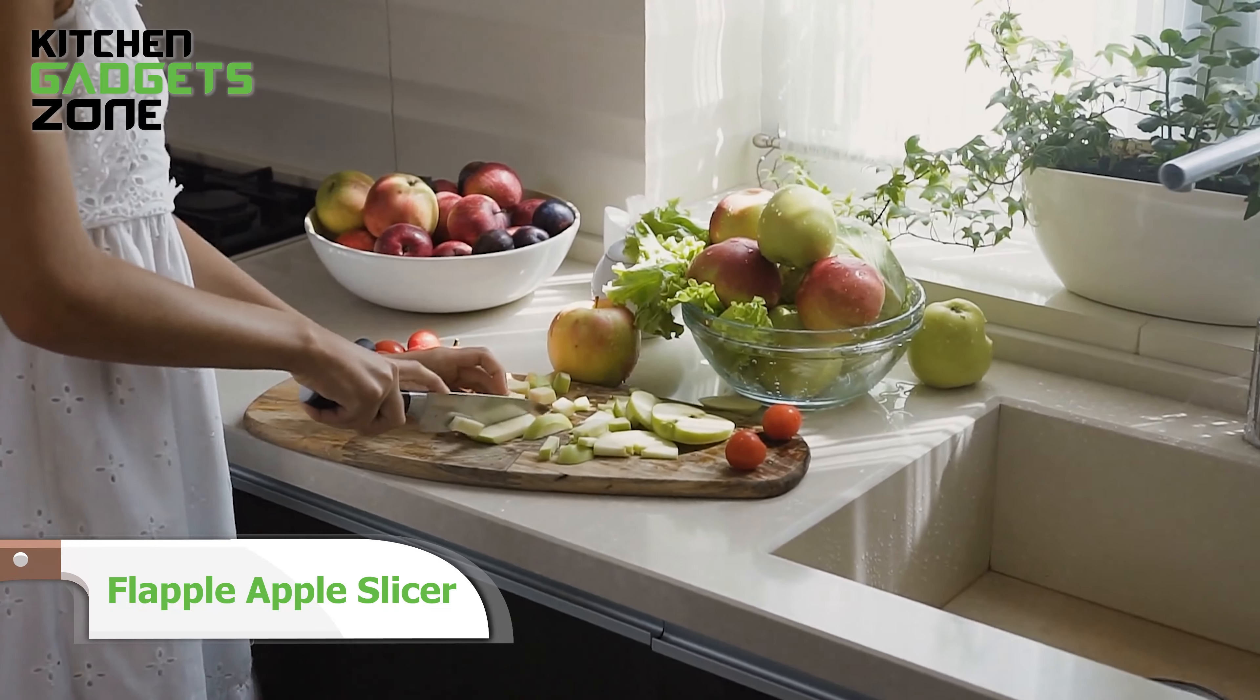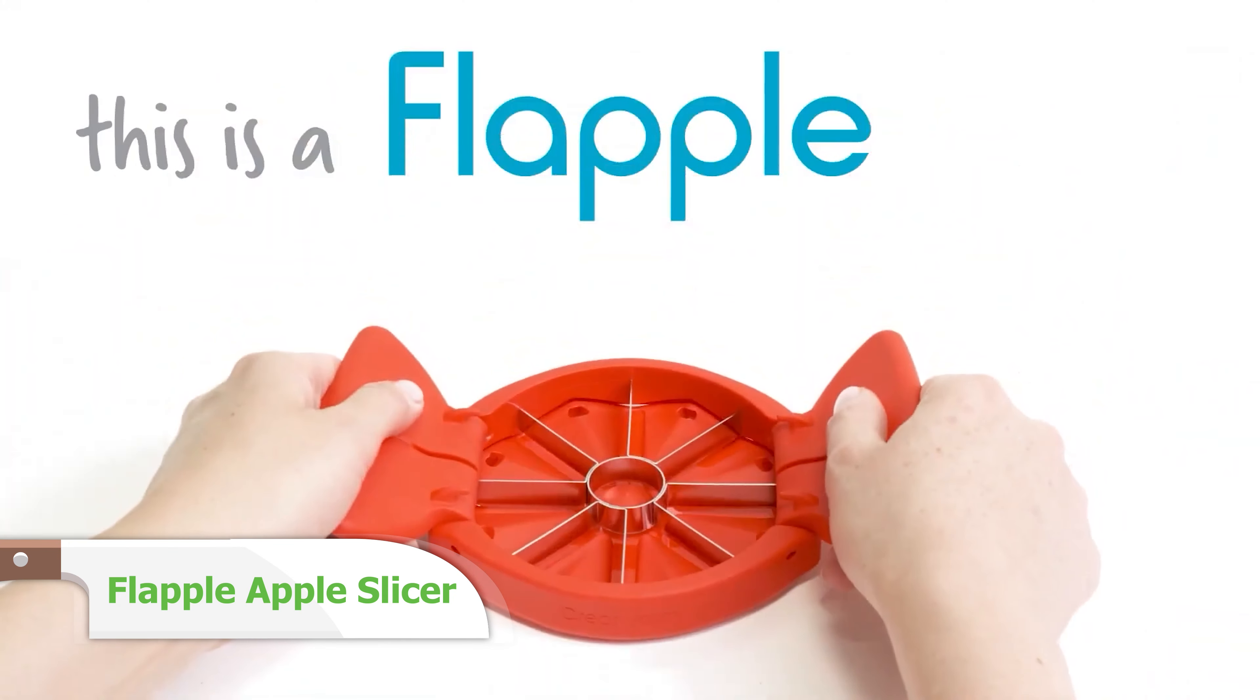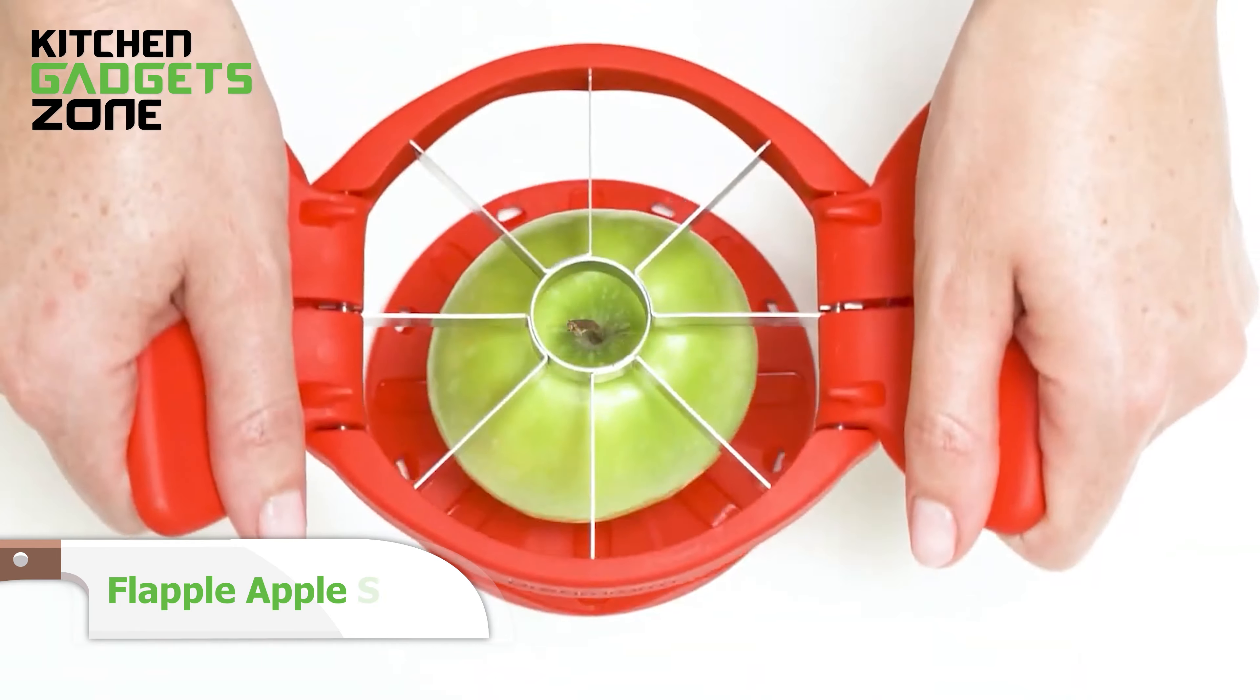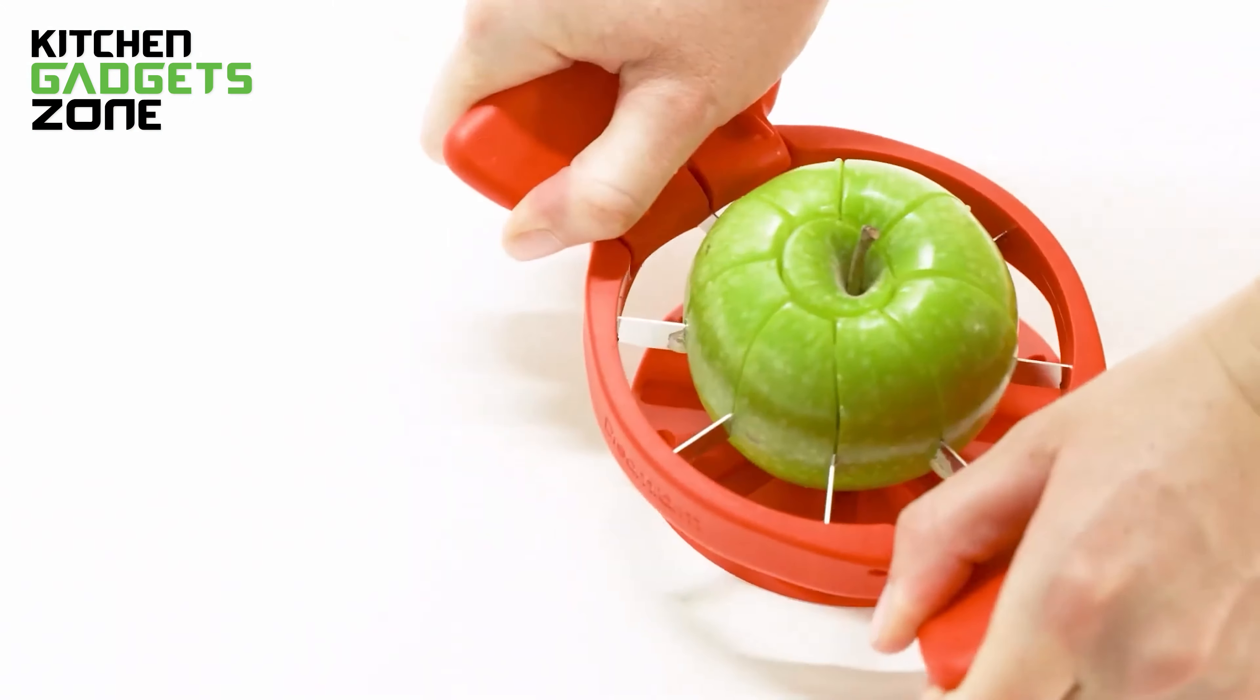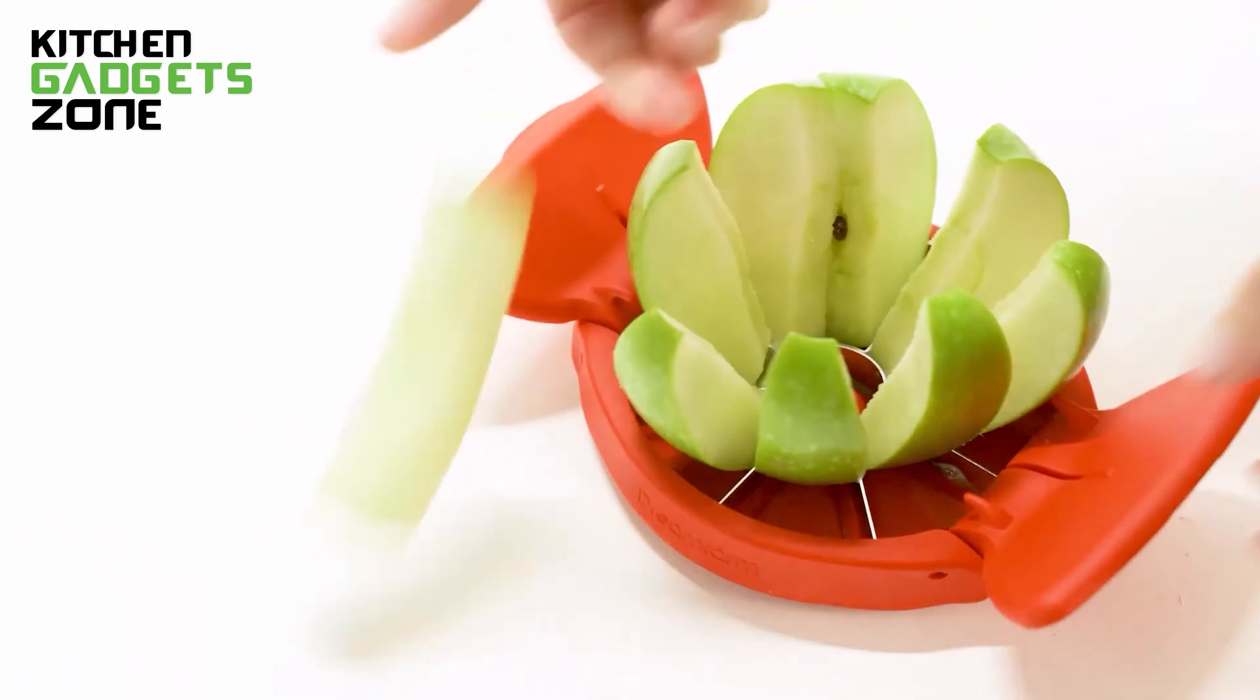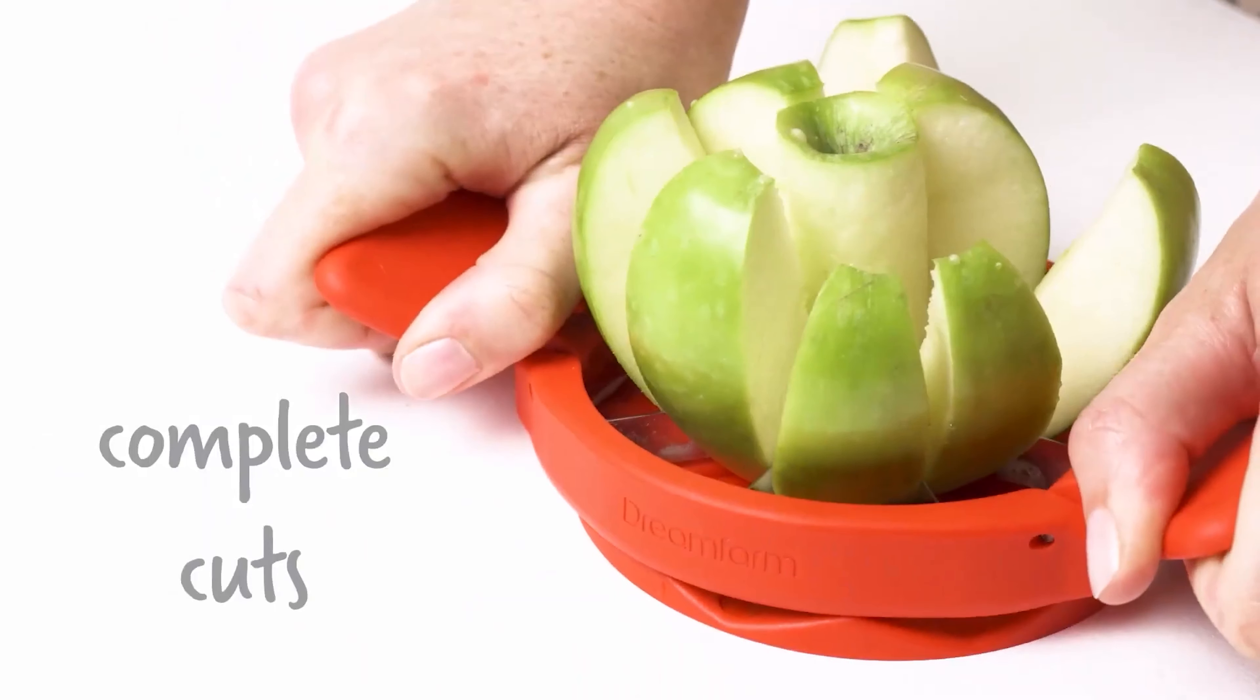Apples are a kitchen staple, but slicing and coring them can be a real hassle. Enter the Flaple Apple Slicer, your new best friend for all things apple. This ingenious gadget cuts through even the crunchiest apples like butter, dividing them into eight equal pieces and removing the core with ease. The wide-diameter cutter ensures perfect slices, no matter the size of your apple.